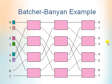Look at this figure. This is the example for Batcher-Banyan example. So here we arrange the destinations in increased order like this: 0, 1, 3, 4, 6 and 7.